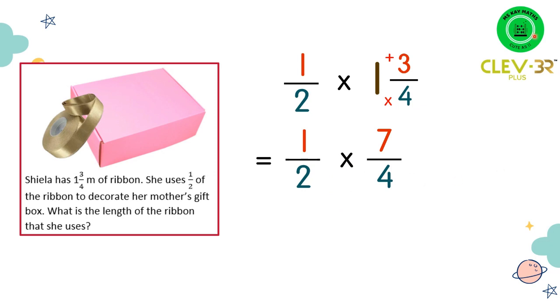So by doing this, we will have 7 over 8 as the final answer. And 7 over 8, we cannot simplify the fraction. So this is your final answer.